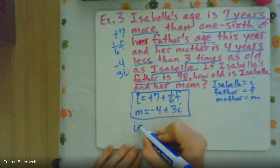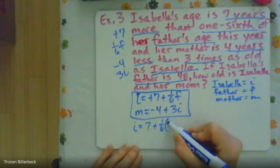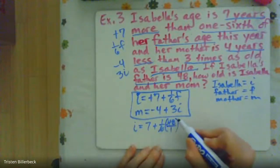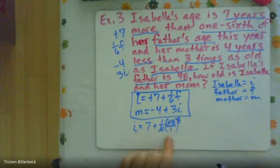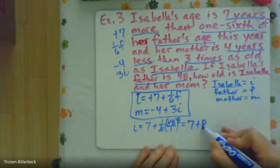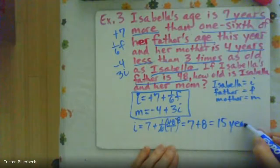So Isabella equals seven plus one-sixth of 48. I'm just going to put a one under here, because that's the same thing as 48. Now there happens to be eight sixes in 48, so we can reduce. So this becomes seven plus eight, so Isabella is 15 years old.